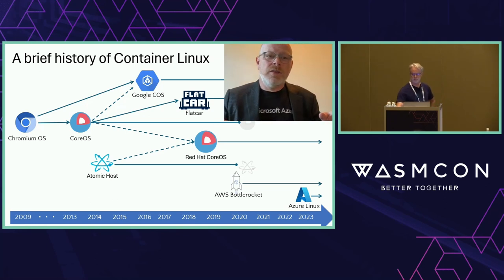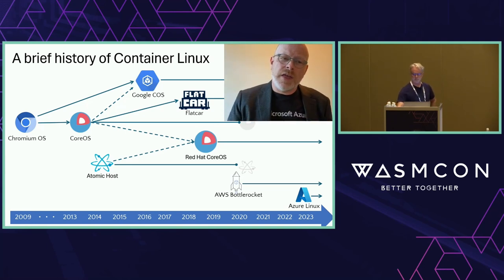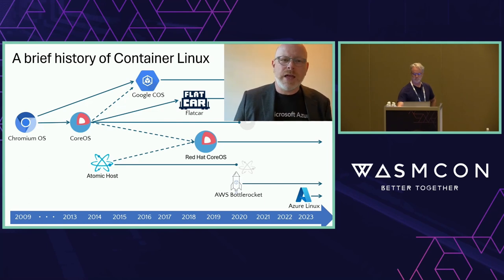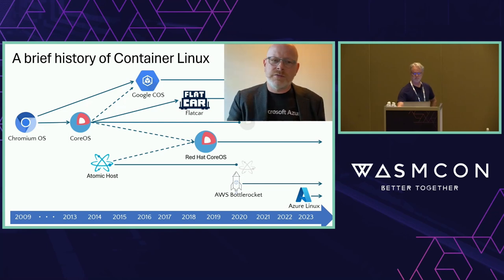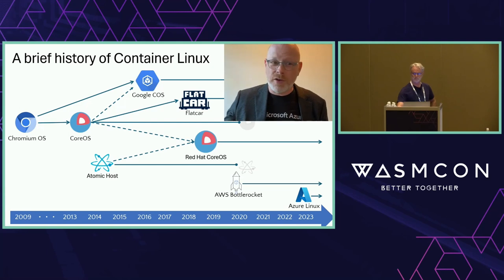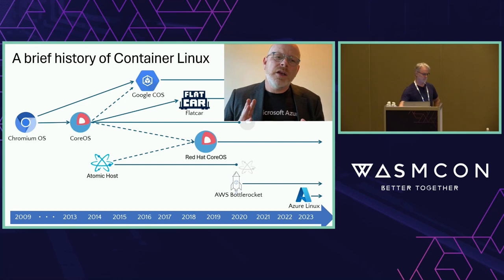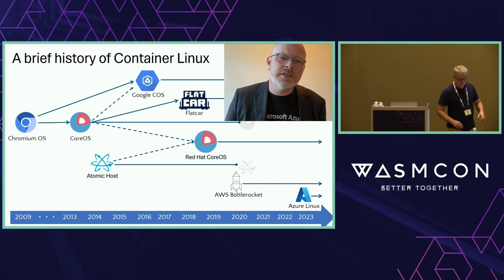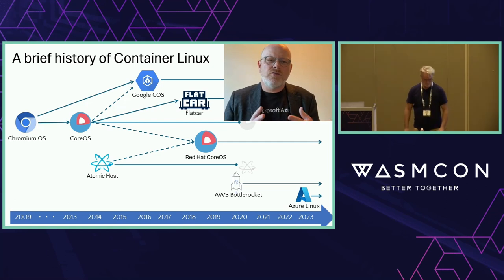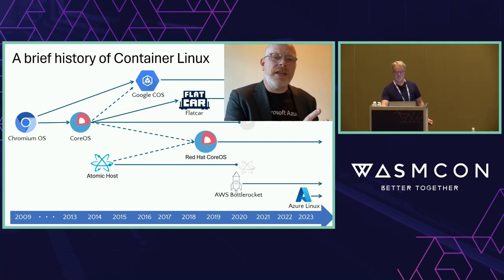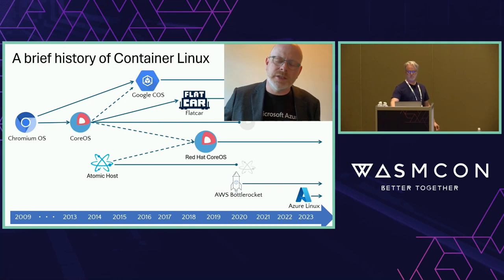In the team I work in within the Azure Core Linux team, we also work on a community-driven project called FlatCar, which is today the only direct descendant of the original CoreOS. You'll be hearing more about it very soon. But first, having heard some of that history from the container world, Ralph, how would you compare where we're at today in the evolution of the WASM ecosystem?